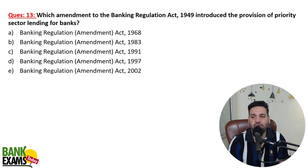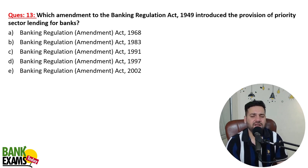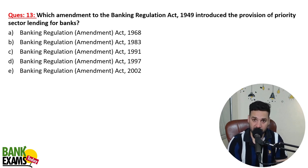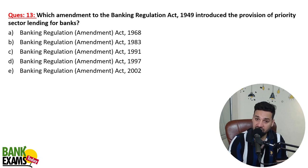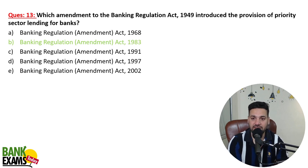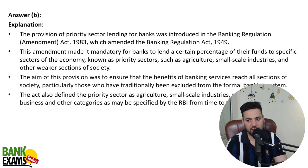Which amendment to the Banking Regulation Act 1949 introduced the provision of priority sector lending (PSL)? PSL is a very important topic for IBPS RRB Scale 2 and Scale 3 exams. In-depth research on PSL, including analysis of the August 2022 master circular, is available in the Financial Awareness course. The provision of PSL for banks was introduced via the Banking Regulation Amendment Act 1983.